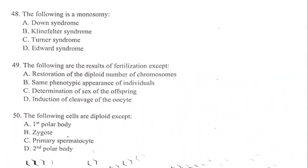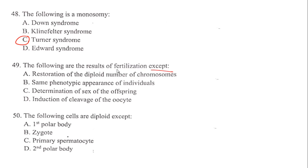The following is a monosomy — the answer is Turner syndrome. Turner syndrome is the monosomy, not Edward syndrome. Edward syndrome is a trisomy — screened first — and Down syndrome is also a trisomy.